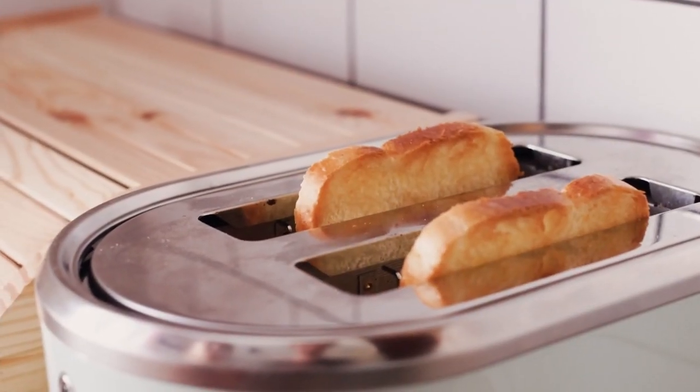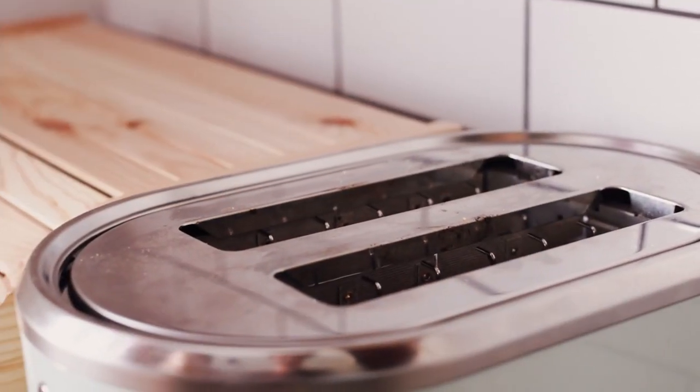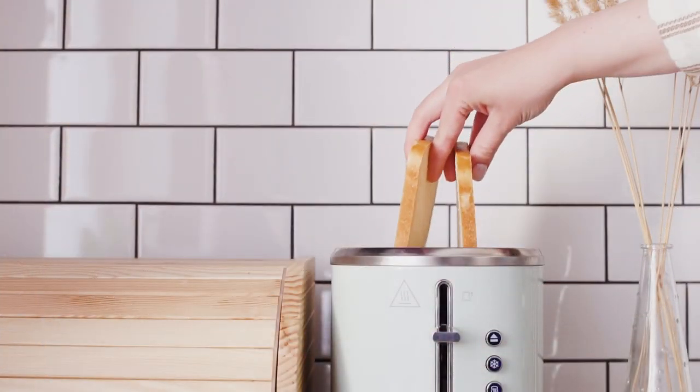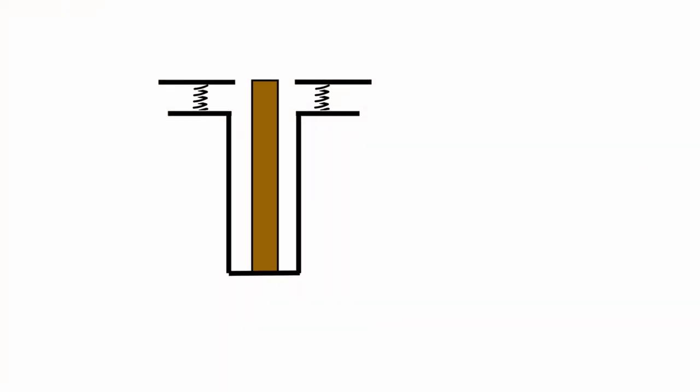Now we know how a toaster heats up the bread, we need to understand how to get the bread to pop up when it's done toasting. To start with, the bread is loaded into the toaster. Here we can see bread being loaded into the toaster, causing the springs to stretch. The springs will keep trying to cause the bread to pop up.